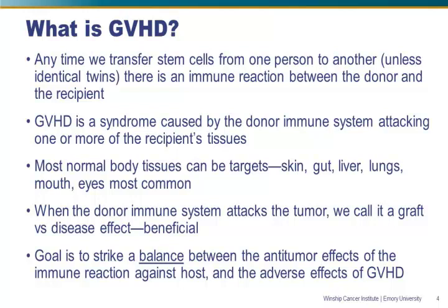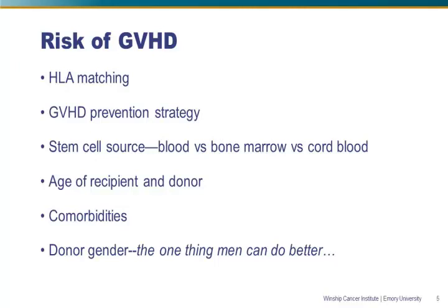The risk of graft-versus-host disease relates to lots of different factors. The most important is the degree of matching between the donor and the recipient at genes that we call the HLA genes. Any time we're transplanting across a barrier where there's mismatch between the donor and the recipient, it requires that we do things beyond the ordinary in terms of graft-versus-host disease prevention.